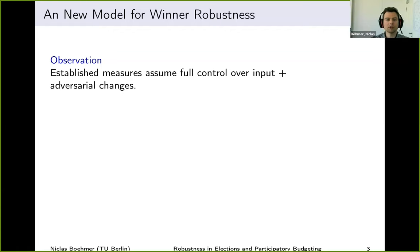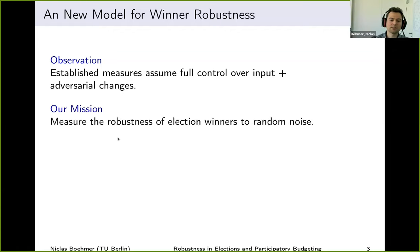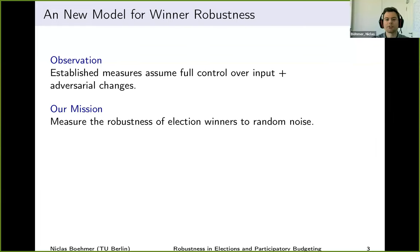If we think about real-world changes — how voters would change their mind — they certainly wouldn't change in exactly the way we want them to. This is why the mission of this work is to measure the robustness of election winners to random noise, where we assume that each swap in each possible position happens with the same probability. We don't make any assumptions — we just assume some changes will happen, but what changes is up to the model.